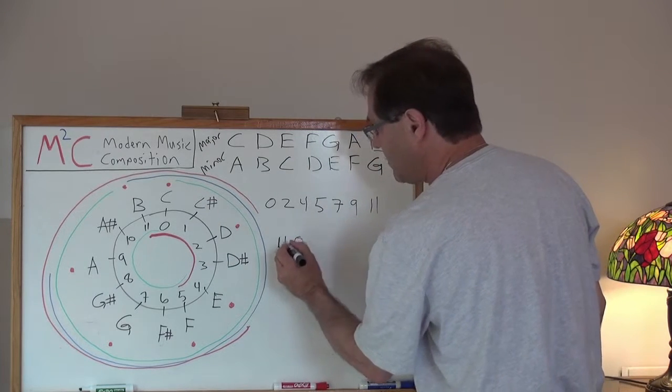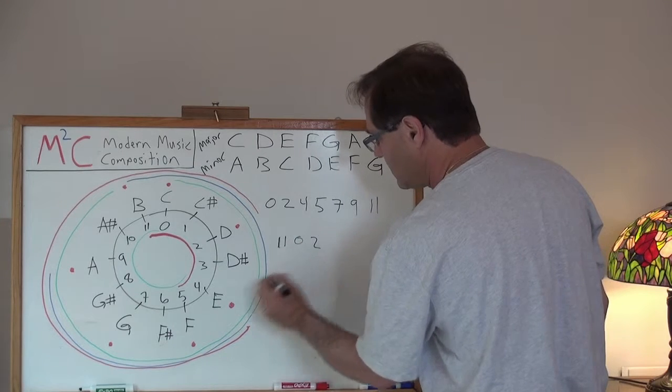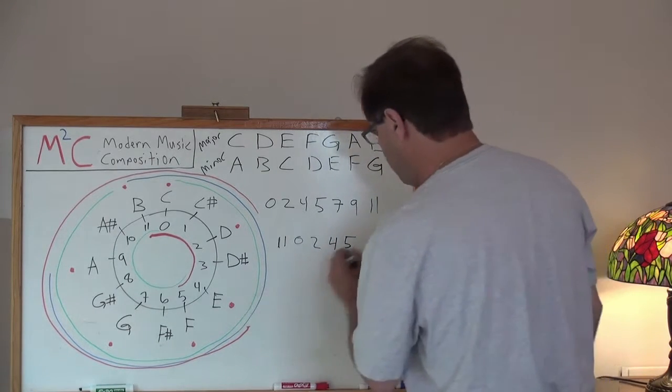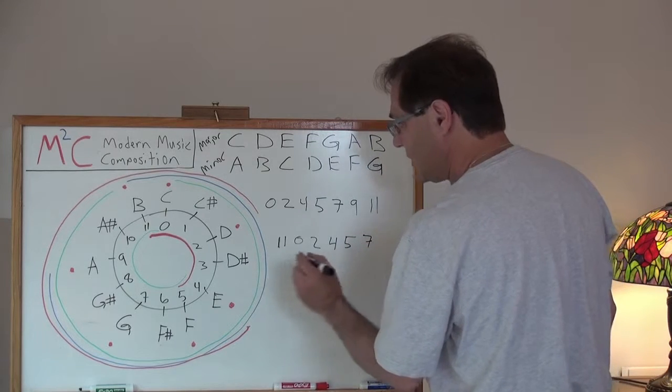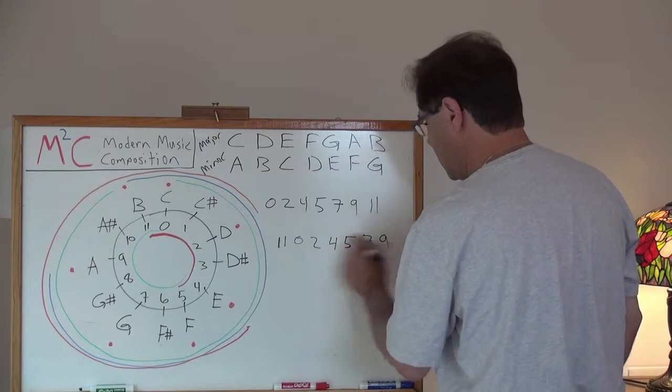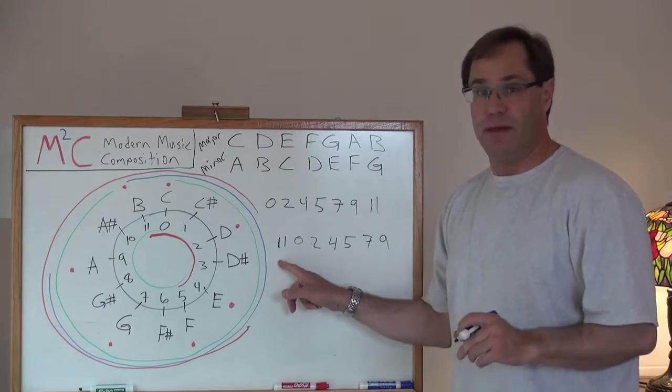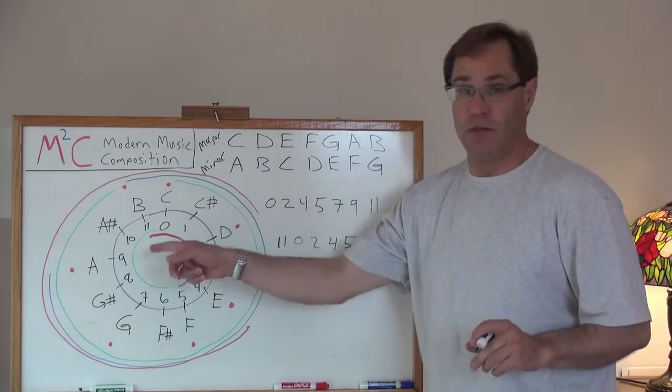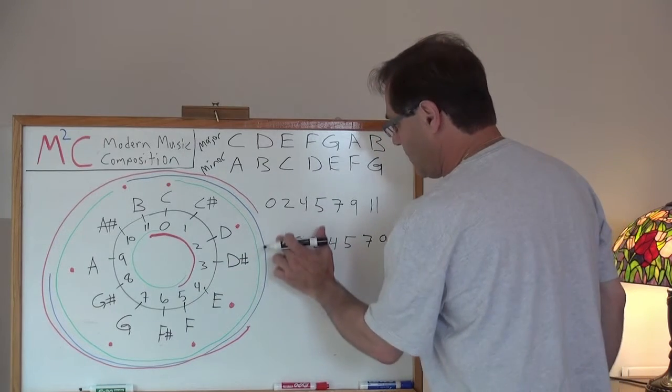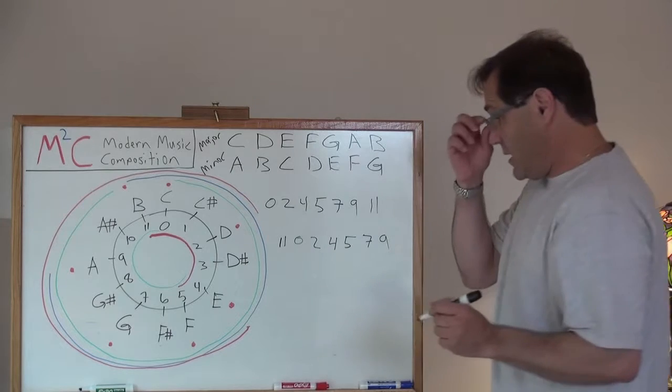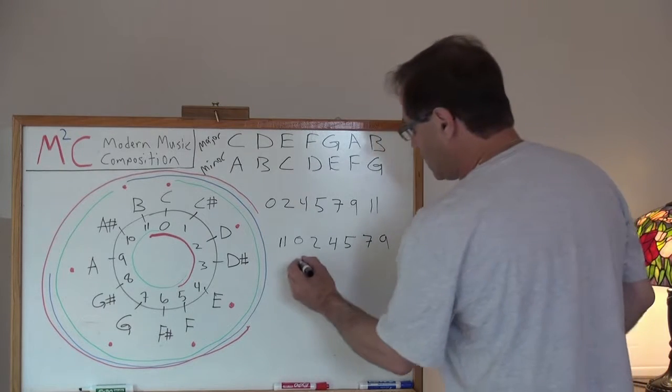And then we got a zero, we got a two, four, five, seven, and nine. One, two, three, four, five, six, seven. Actually, you'll see 11 written with an E and you'll see 10 written with a T just so that you don't get it confused with two ones. So that gets us into what's called the normal form.